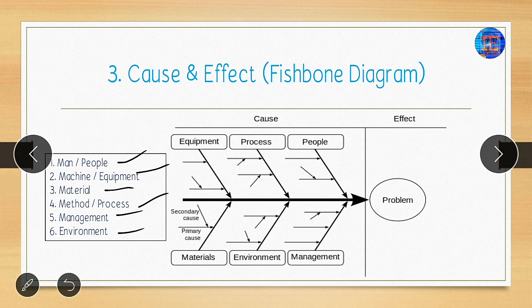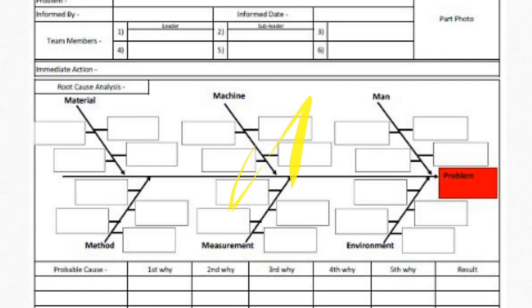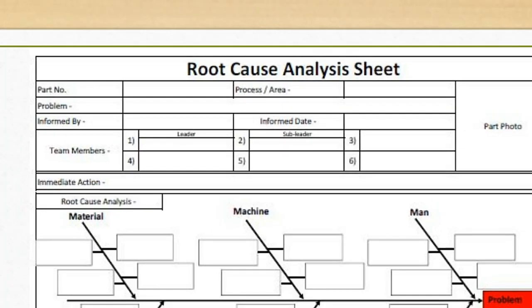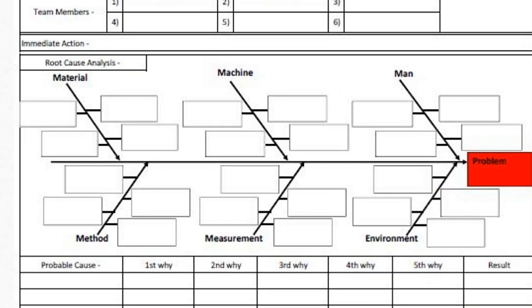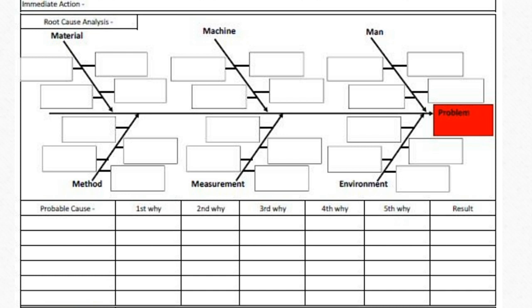Now I will explain the root cause analysis format. In this format, we first fill in details like part number, process, area, problem description, and team members. Then we record the immediate action — the correction after having the problem. Next, to do the root cause analysis, we use the fishbone diagram to find probable causes related to Man, Machine, Material, Method, and Environment.